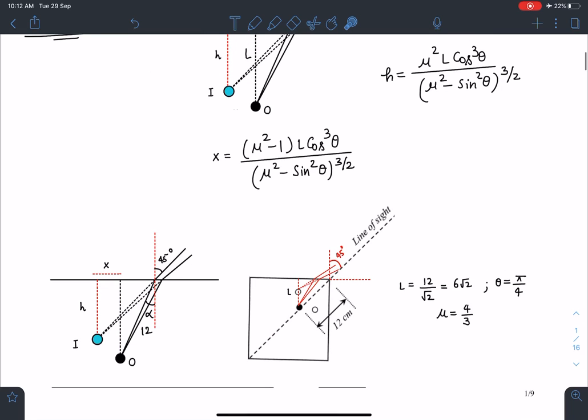So if I place it, this will behave like my medium interface. This will behave like my medium interface and observer is placed at this location. That means observer is placed for this particular surface, it is placed at 45 degree angle. He is placed at 45 degree angle.